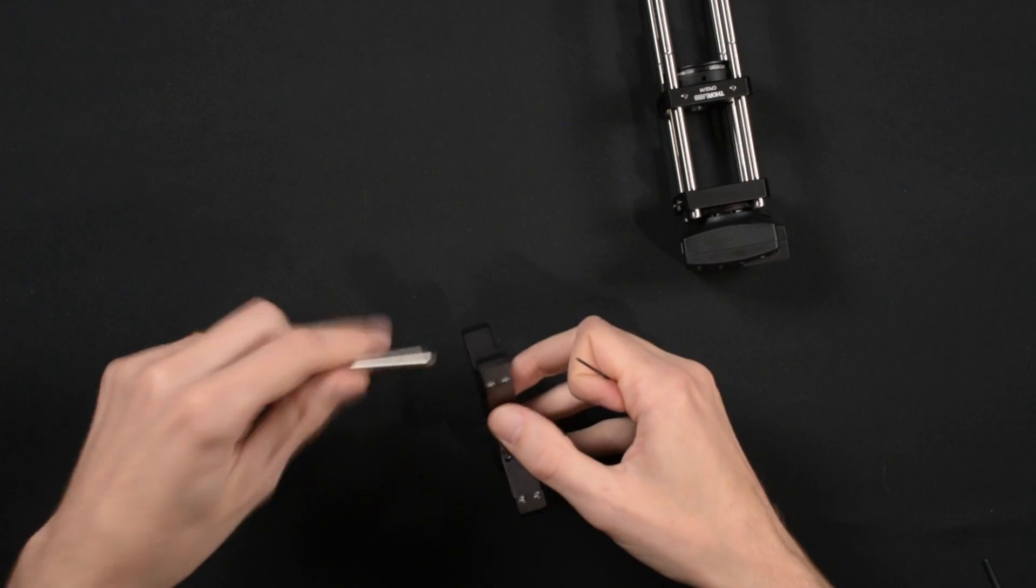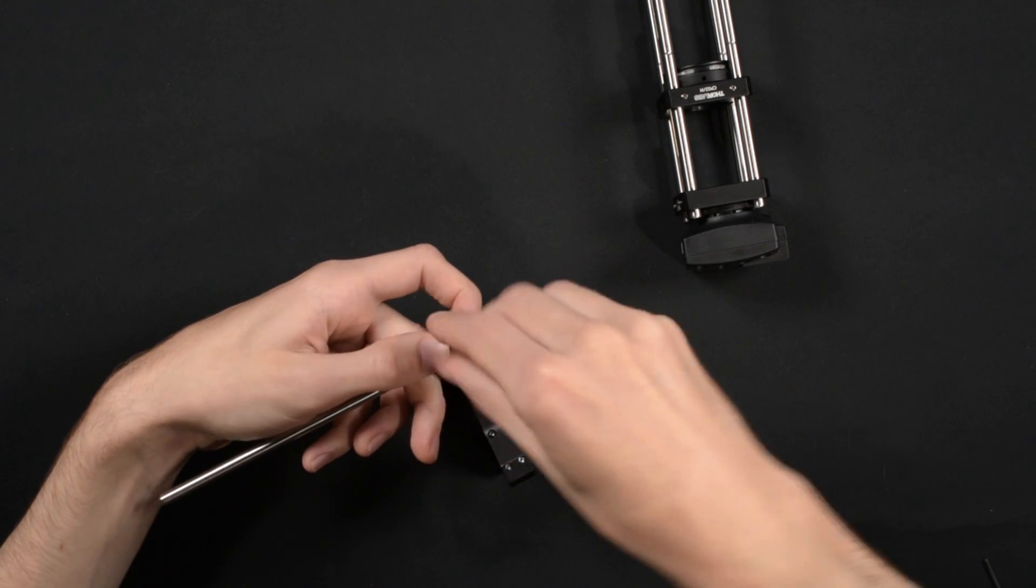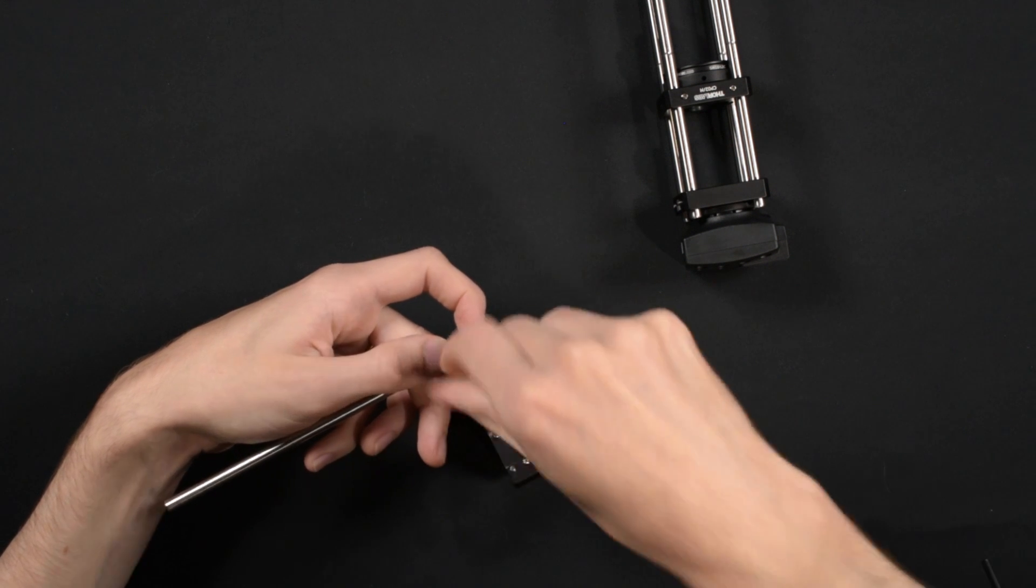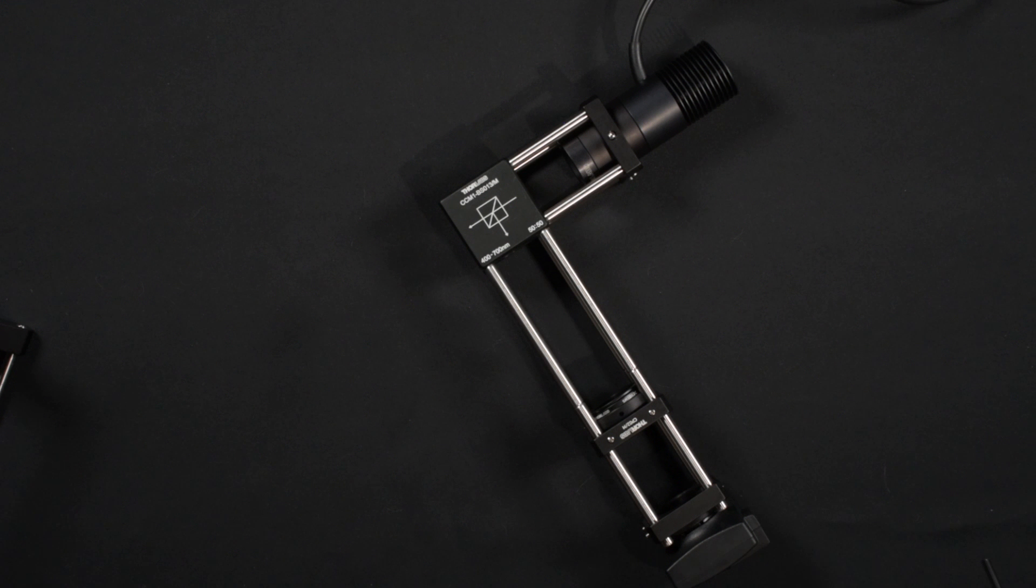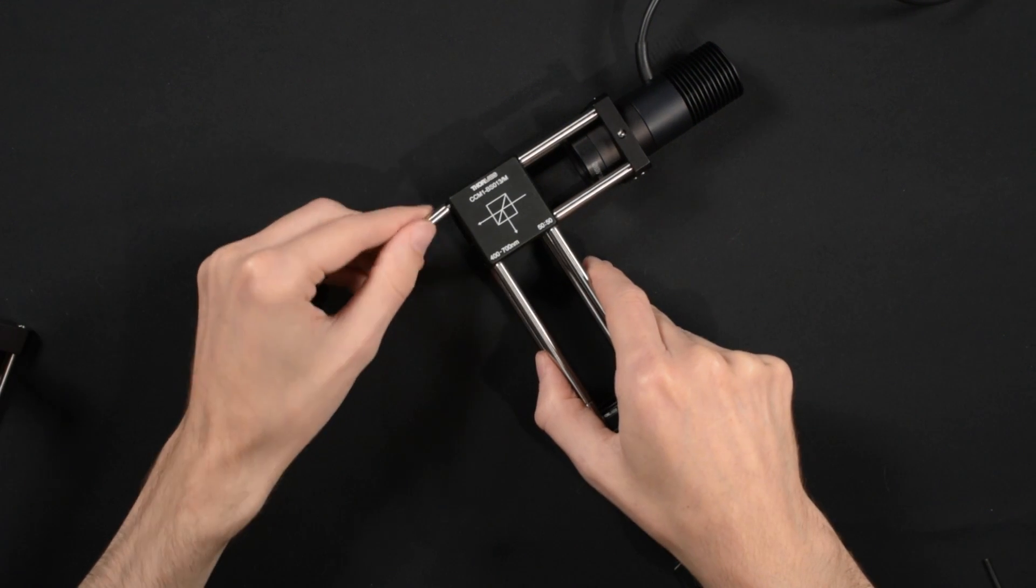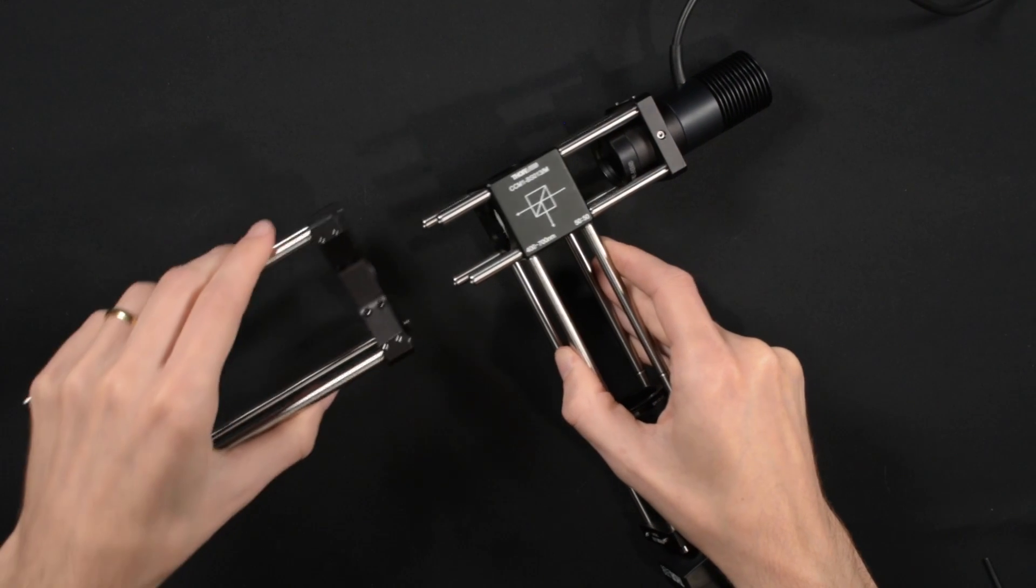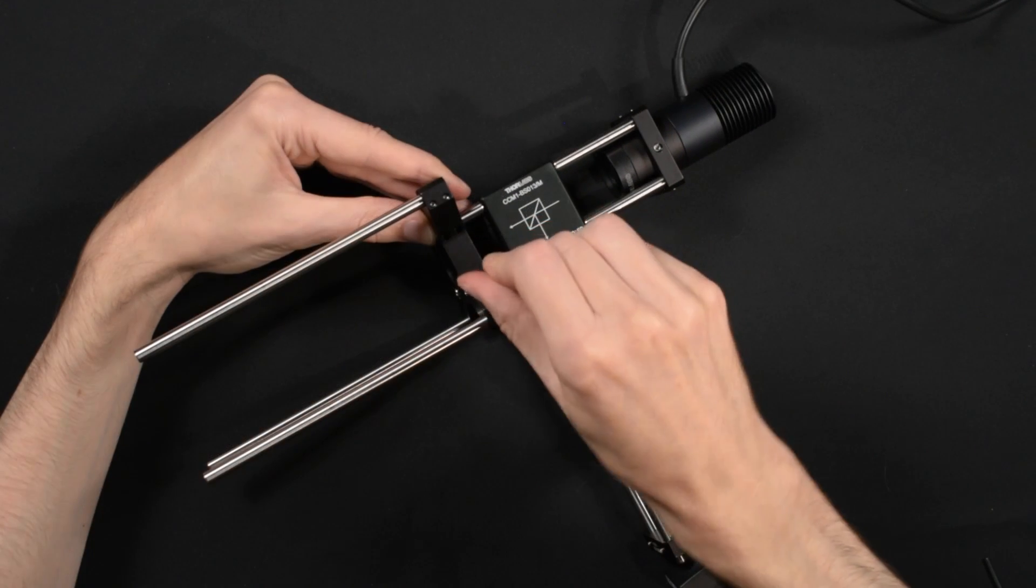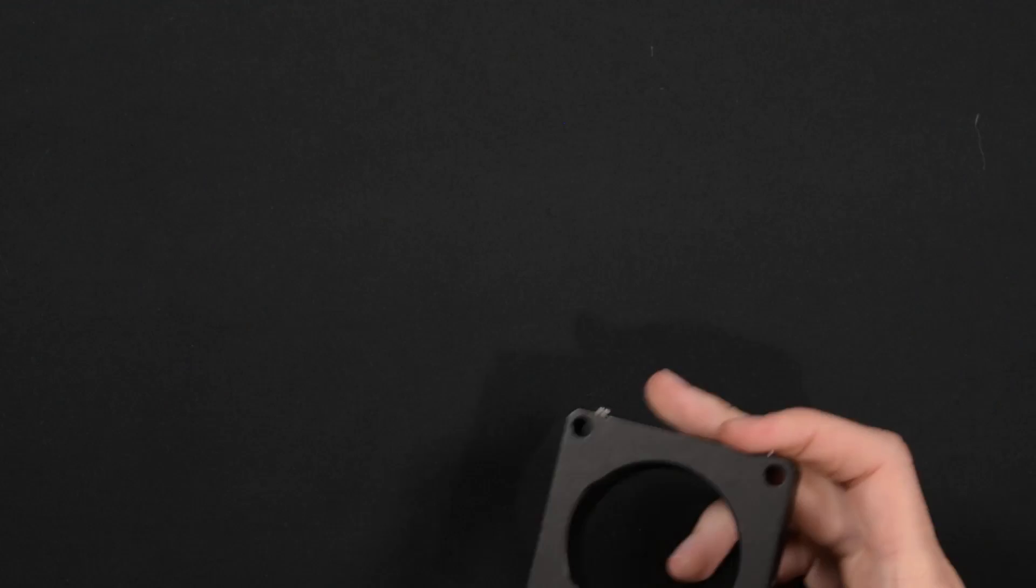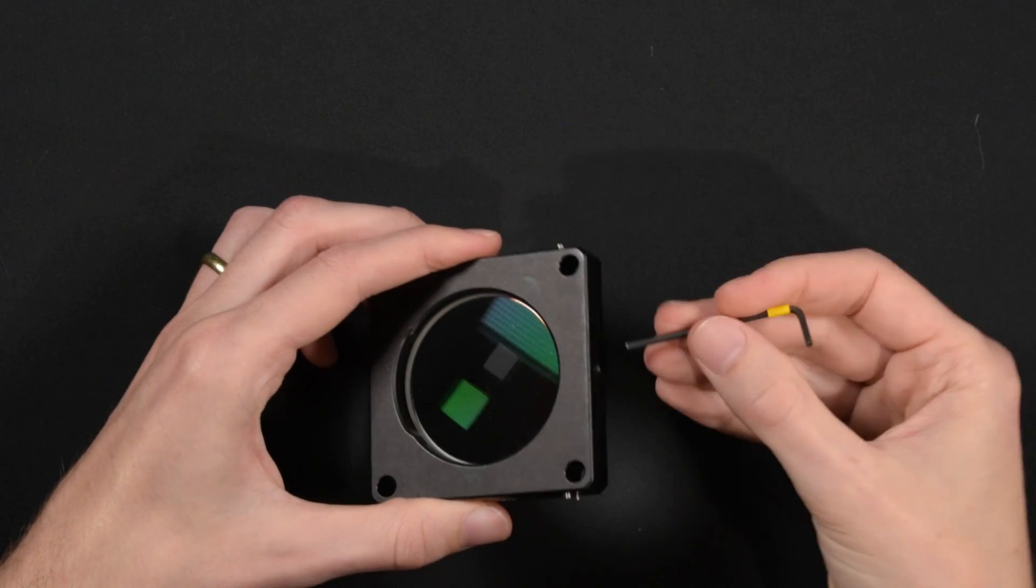We will now add the output lens of our auto-collimator setup. However, because the lens is 2 inch diameter and we are using a 1 inch cage system, we need a 1 inch to 2 inch cage system adapter plate. Because the output lens should be placed at about 7 inches from the cube beam splitter, I have used 6 inch rods on the long side and 1 inch rods on the short side close to the beam splitter.